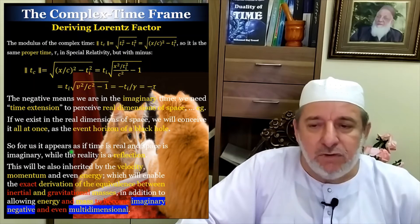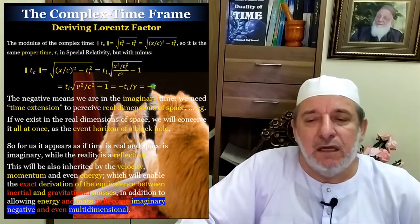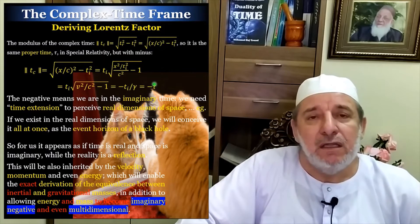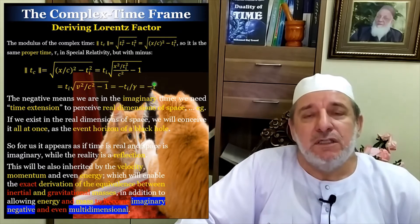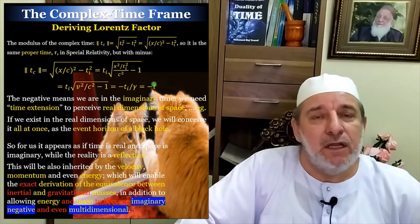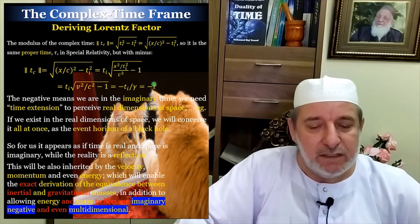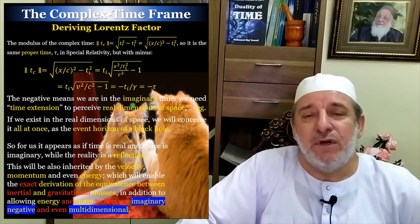Now, actually, this negative here is very important. Because we will see later that this will be inherited by the velocity, the momentum, and even the energy. And therefore, this will allow us to derive the equivalence between inertial mass and gravitational mass. And also, it will allow energy to become multidimensional.